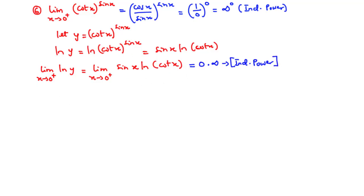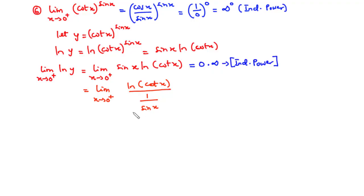We further manipulate by rewriting sin x · ln(cot x) as ln(cot x) divided by 1/sin x, which is ln(cot x) divided by cosec x. Direct substitution: ln(cot 0) = ln(infinity) = infinity, and 1/sin 0 = 1/0 = infinity, so we have infinity over infinity — an indeterminate quotient. We can apply L'Hôpital's rule.